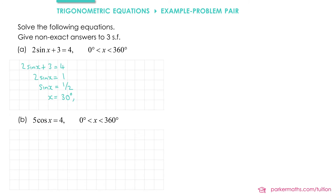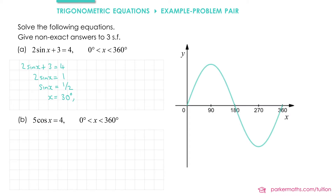Next up, we should check if this equation has any other solutions. We saw in a previous video that equations like this will usually have two solutions within any 360 degree region, so let's apply the symmetry property. On the right is the graph of y equals sine x — our solution of 30 degrees is somewhere around here, and we can see there will be a second solution the other side of 90. The rule we use is: the second solution equals 180 minus the first solution.